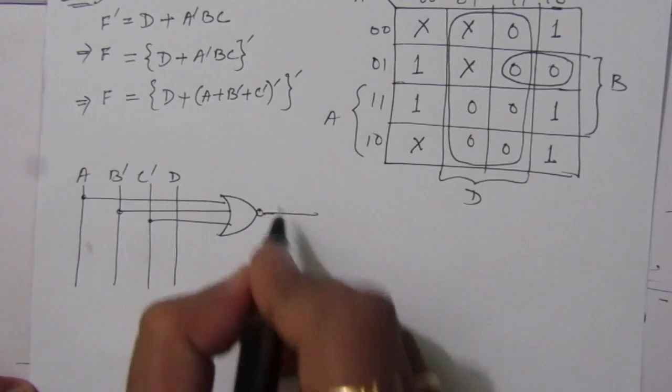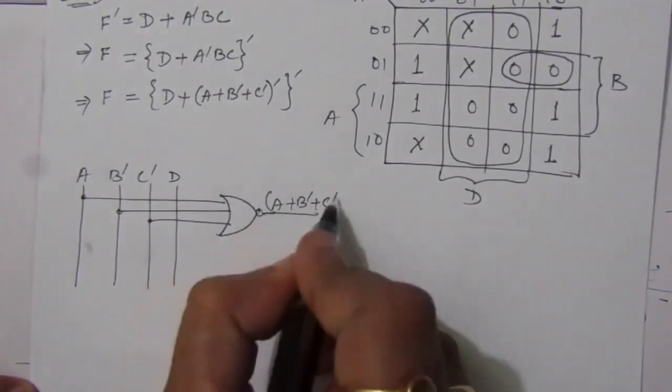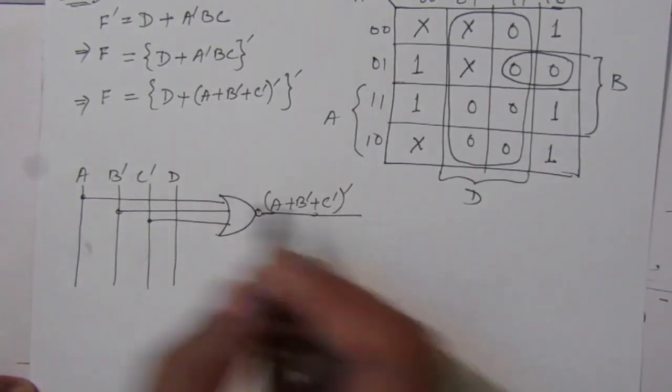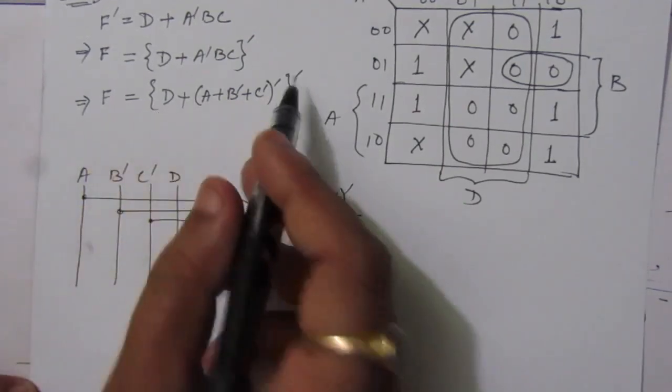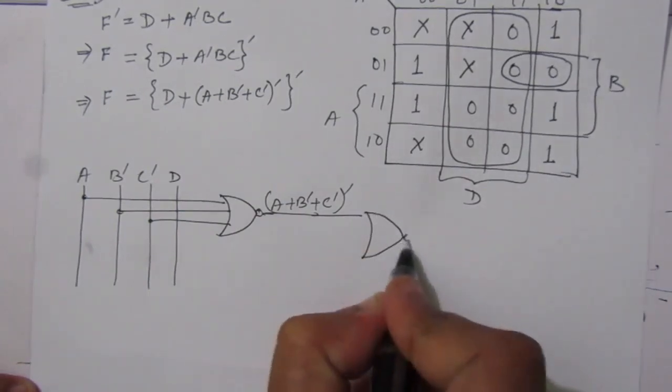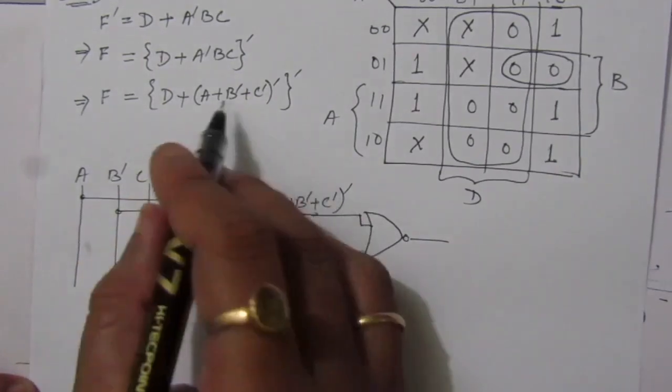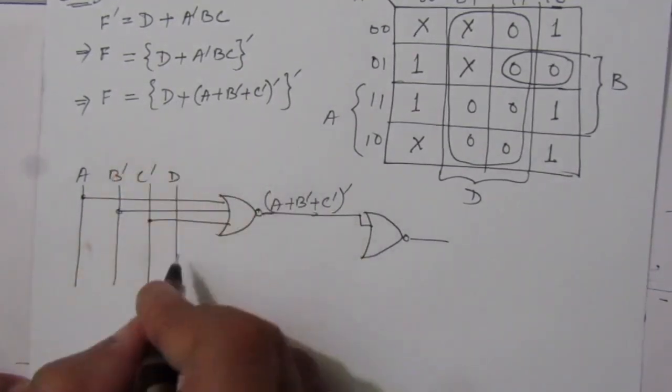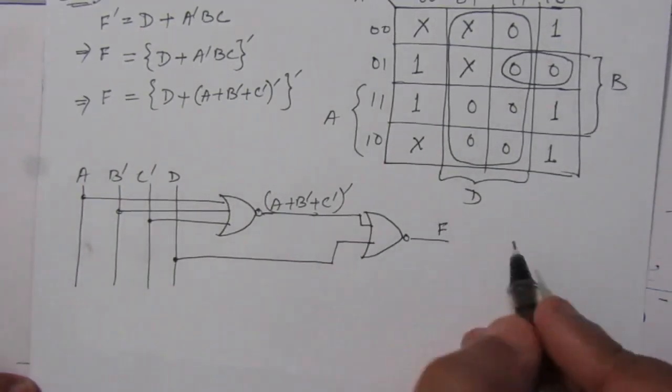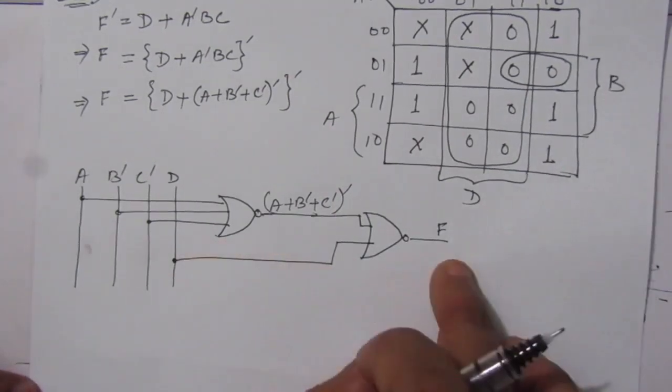We will use here a NOR gate. So we will get here A plus B bar plus C bar, whole bar. So at this NOR gate output, we will get this one. Then we have to add these two with D, and we have complemented, so we can use another NOR gate. This will be one input, and we have D, so we will take an input from here. So we will get here the function F. Here we can see that we have used only two number of NOR gates to realize this function, or to draw the circuit diagram of the given function.